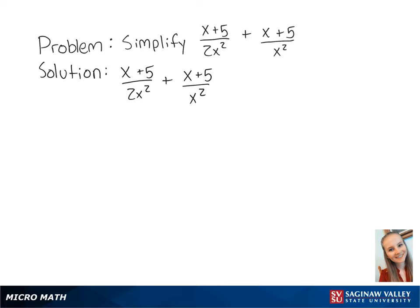For this problem, we want to add these two rational expressions. The first thing we should do is find a common denominator. If we multiply the second fraction by 2 over 2, this will give us x plus 5 over 2x squared.